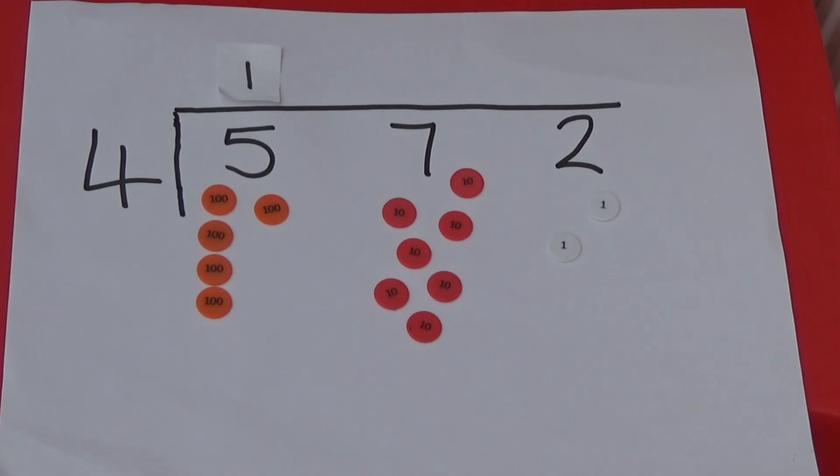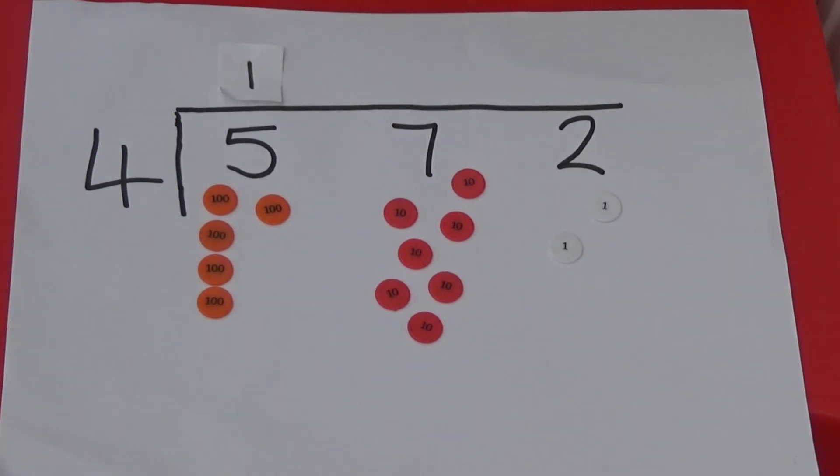This time I have a problem. I have one more 100 counter and I can't make another group of 400. I am going to exchange the 100 for ten 10s counters and put them with the 7 I already have.